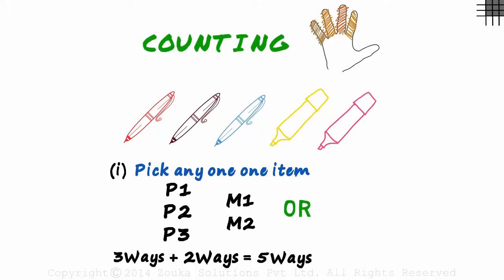This is the first rule of counting: OR. OR always means addition. First pen or the second pen or the third - three ways in which a pen can be picked, and similarly two ways in which a marker can be picked. OR always means addition.